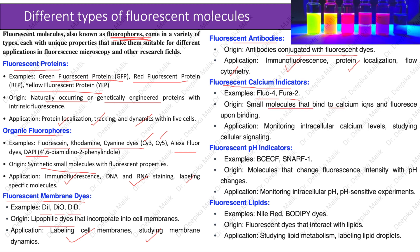Fluorescent calcium indicators — examples include Fluo-4 and Fura-2 — are small molecules that bind to calcium ions and fluoresce upon binding. Applications include monitoring intracellular calcium levels and studying cellular signaling. Fluorescent pH indicators — examples include BCECF and SNARF-1 — are molecules that change fluorescence intensity with pH changes. Applications include monitoring intracellular pH and pH-sensitive experiments. Fluorescent lipids — examples include Nile Red and BODIPY dyes — interact with lipids and are used for studying lipid metabolism and labeling lipid droplets.